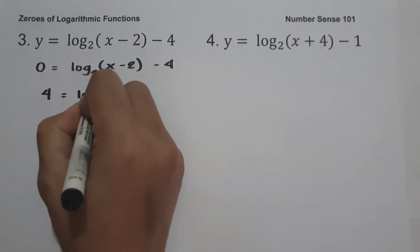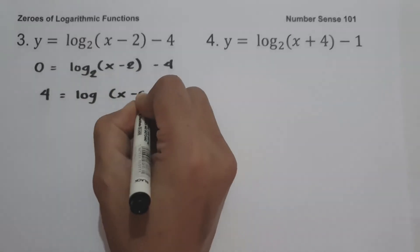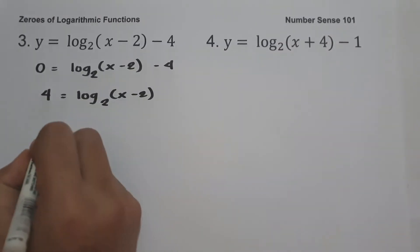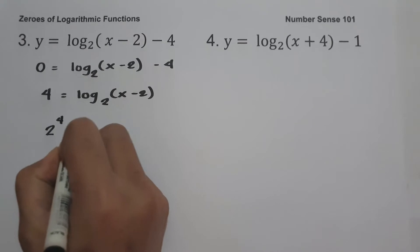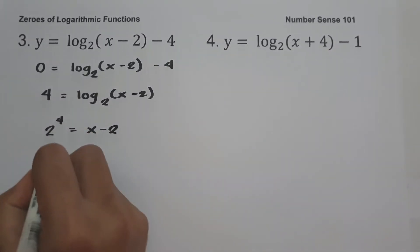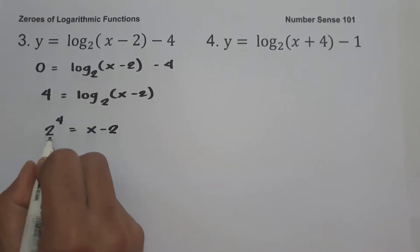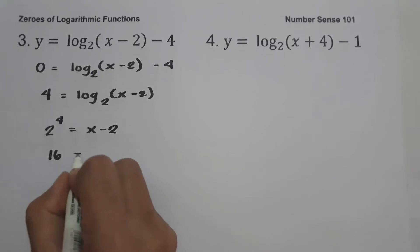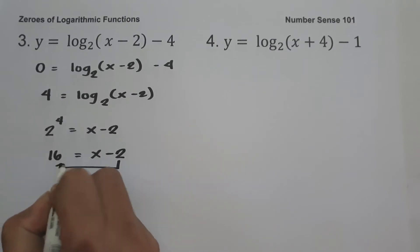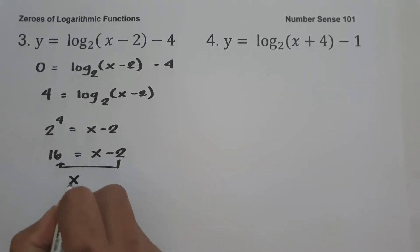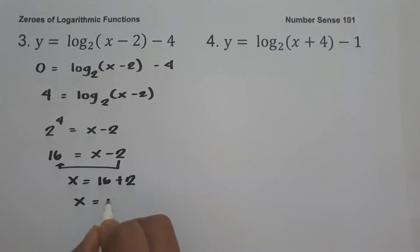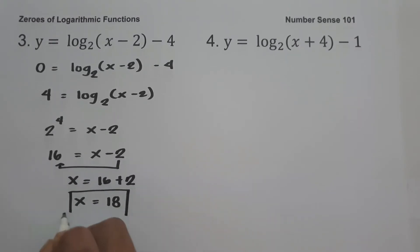Let us convert this into exponential form: 2 raised to 4 equals x minus 2. Since 2 raised to 4 is 16 — meaning you multiply 2 by itself 4 times — we have 16 equals x minus 2. Moving negative 2 to the other side: x equals 16 plus 2, which is 18. Therefore 18 is the zero of the given function.